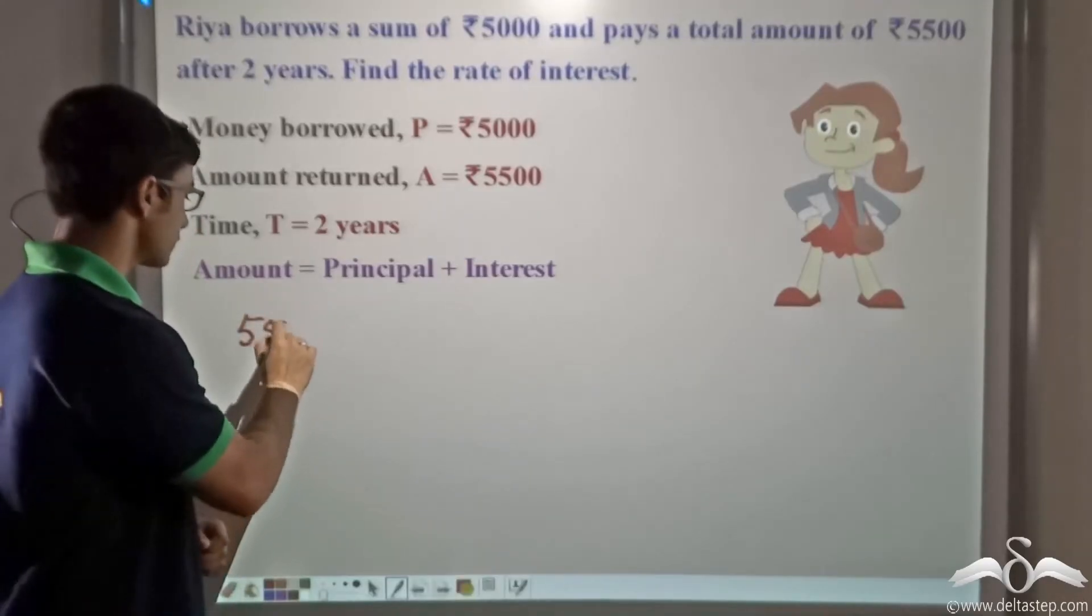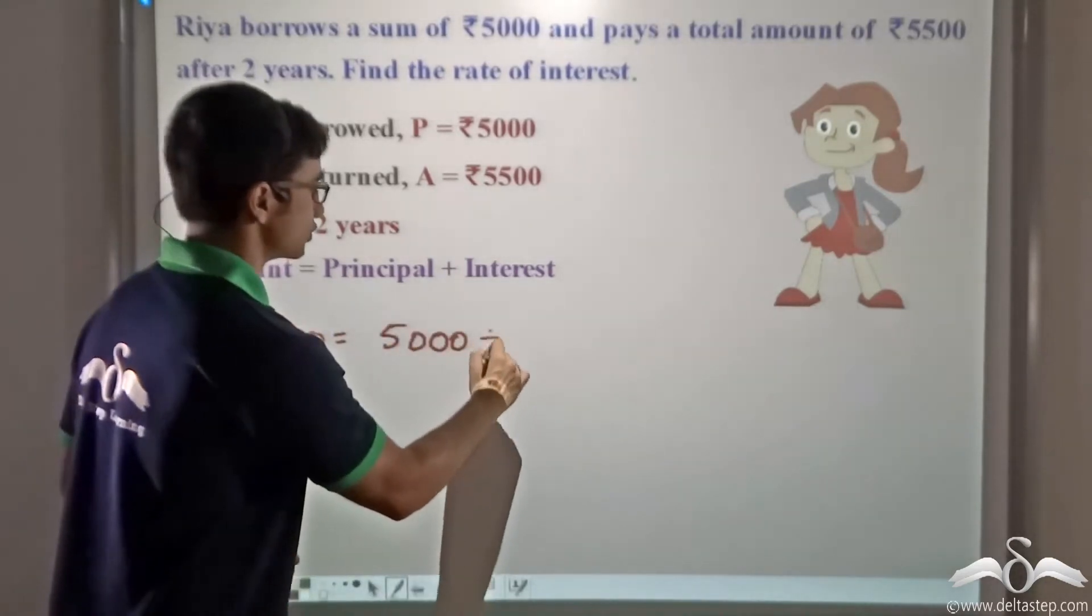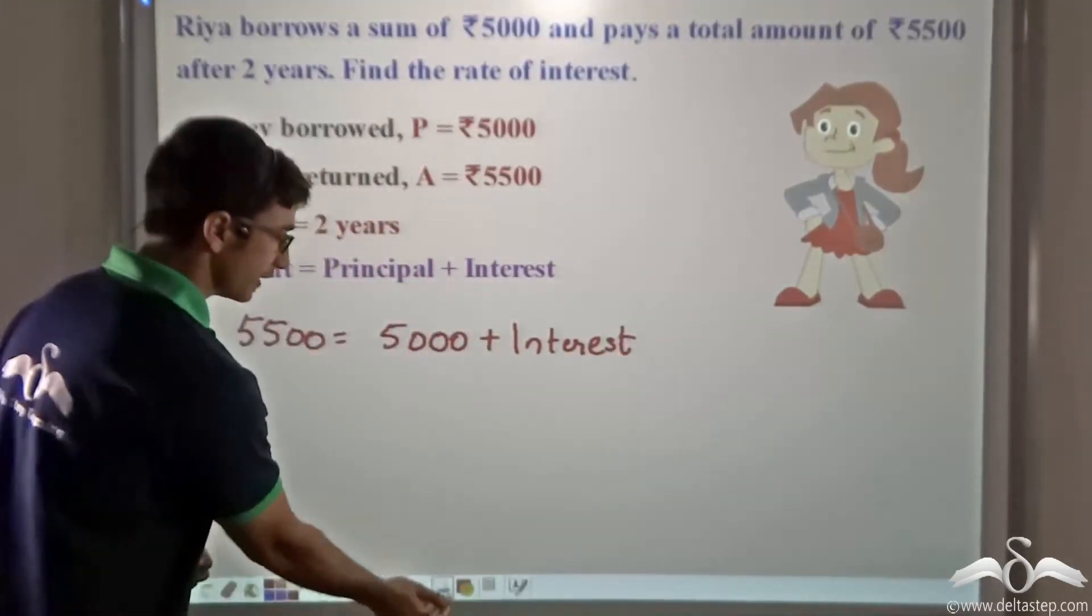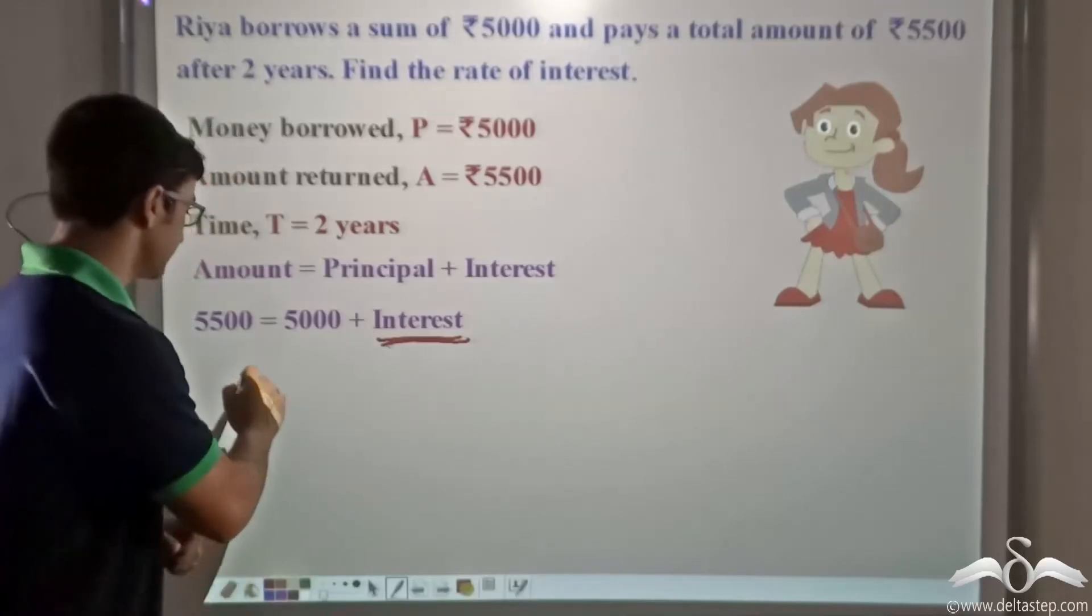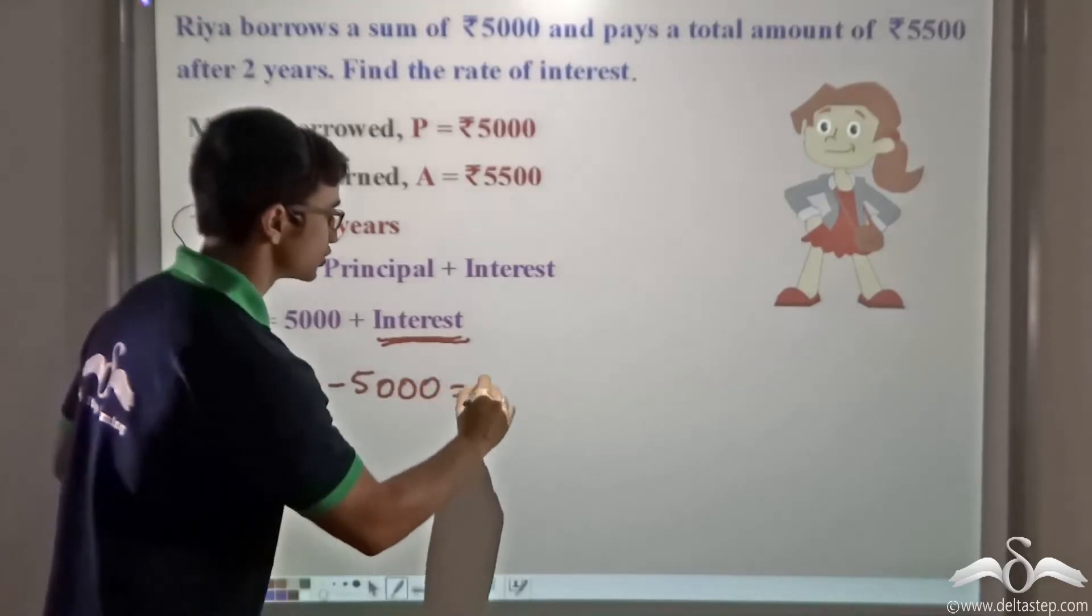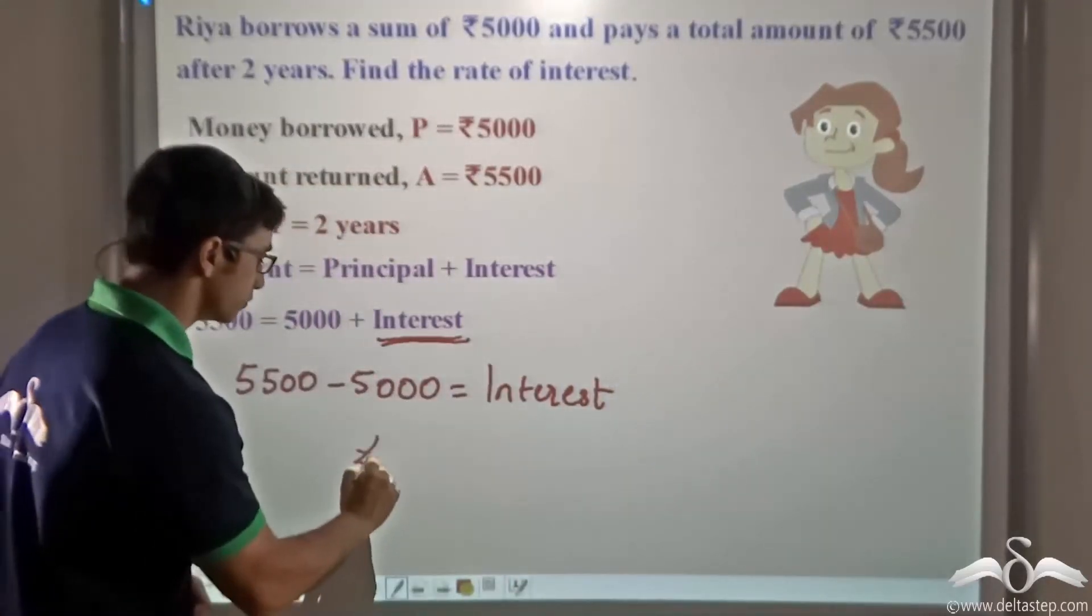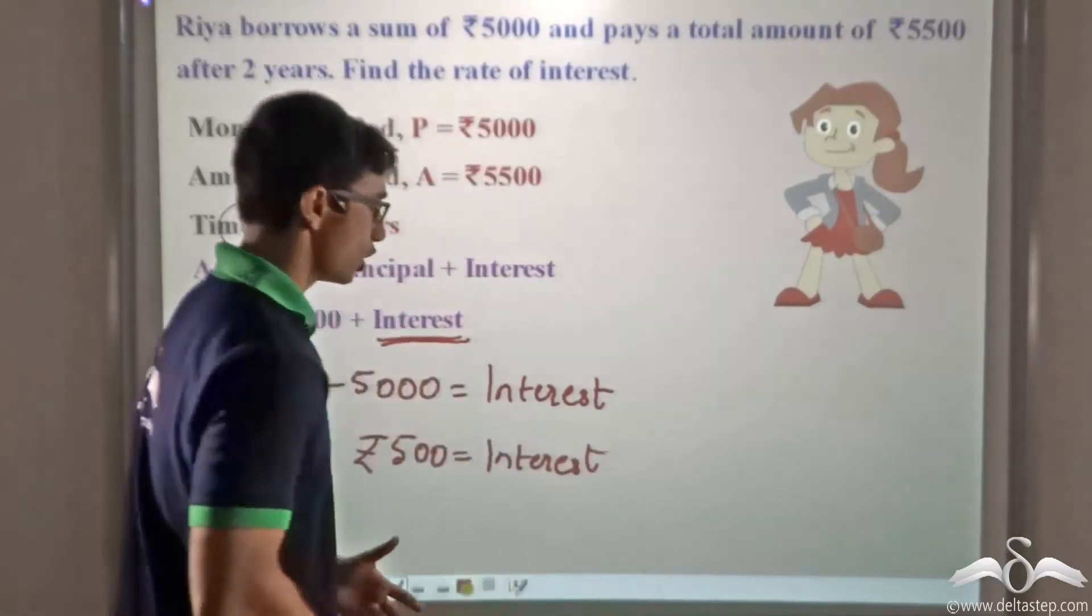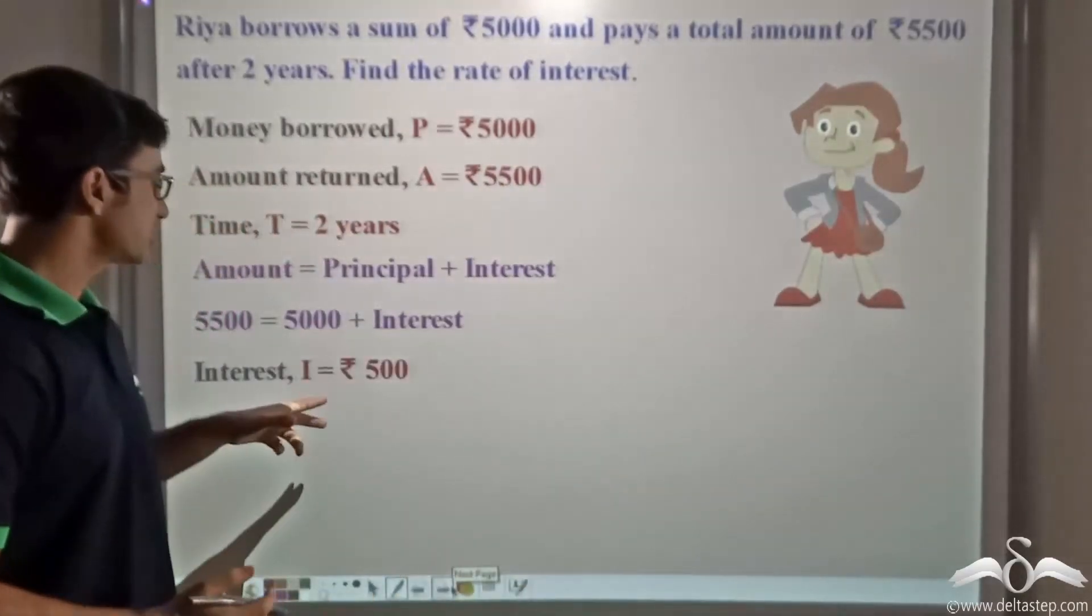So over here, amount is 5500, the principal is 5000, and we have to calculate the interest. So if I simply rearrange this equation, I will be able to calculate the value of interest. That will be 5500 minus 5000, giving me the interest, that is nothing but Rs. 500, which comes out to be the interest or the additional amount of money that Rhea will have to pay. So the interest is Rs. 500.